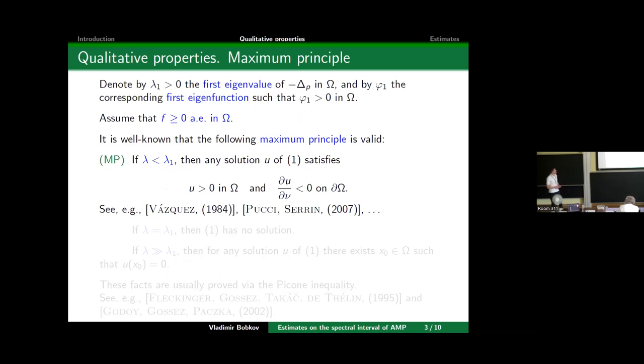For that, the first eigenvalue of the p-Laplacian will be important for us. We denote the first eigenvalue as λ₁, and the corresponding first eigenfunction, whichever normalization you have, we denote as φ₁. The only assumption, just for simplicity, is that φ₁ is strictly positive. It's really strictly positive and satisfies the boundary point lemma.